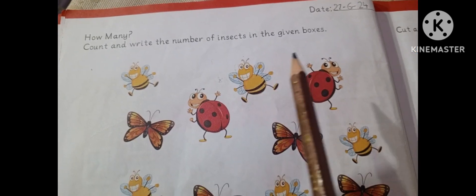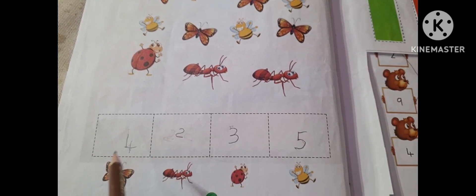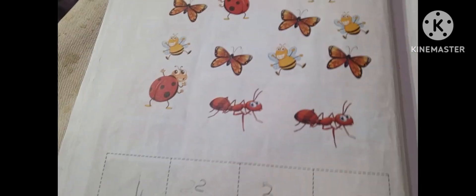Count and write the number of insects in given boxes. Ladybugs, 2 and 3. See, here the ladybug has 3, 2, 4, 2, 3, 5. You have to count them and write them.